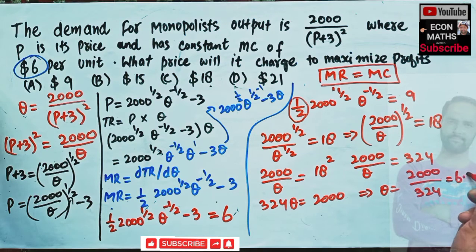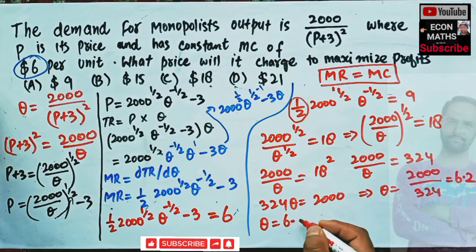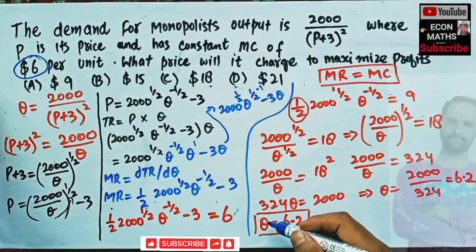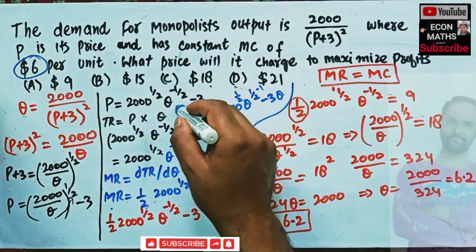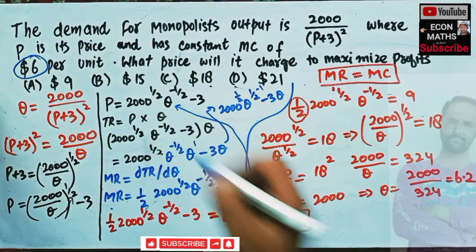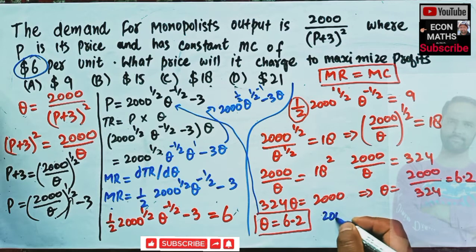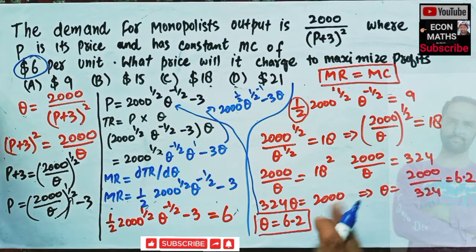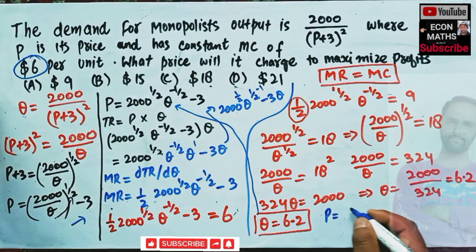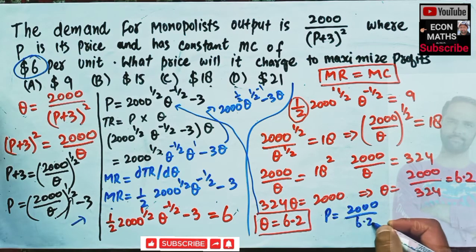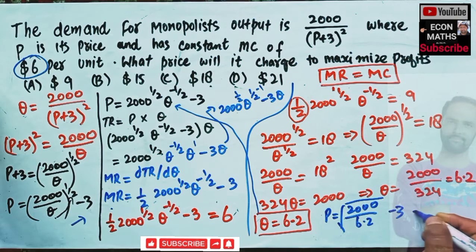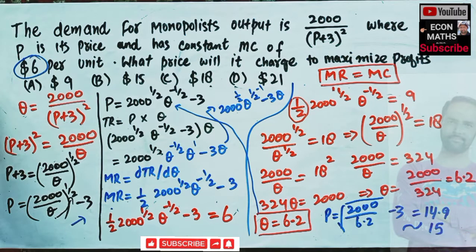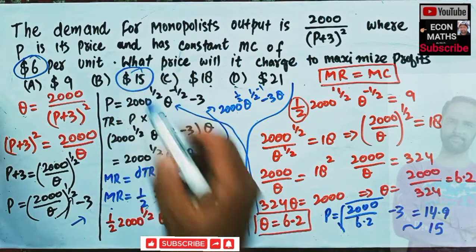To find the profit-maximizing price, we plug Q = 6.2 into the inverse demand function: P = (2000 / 6.2)^(1/2) − 3. Solving this gives approximately 14.9, which rounds to 15 dollars. So the profit-maximizing price is 15 dollars — option B.